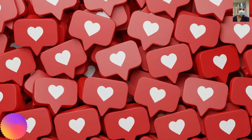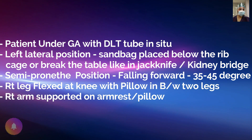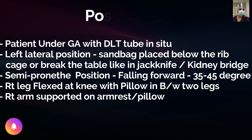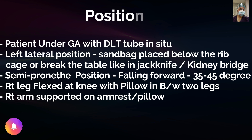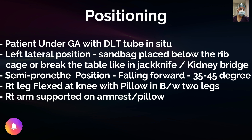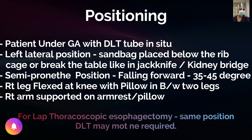The patient is under general anesthesia with a double-lumen tube placed to allow single-lung ventilation, helping us enter the chest safely with the ipsilateral lung collapsed. After placing the double-lumen tube, the patient is changed to the left lateral position. A sandbag is placed below the rib cage so the upper rib cage opens up, or the table bridge may be raised in a jackknife or kidney bridge position.